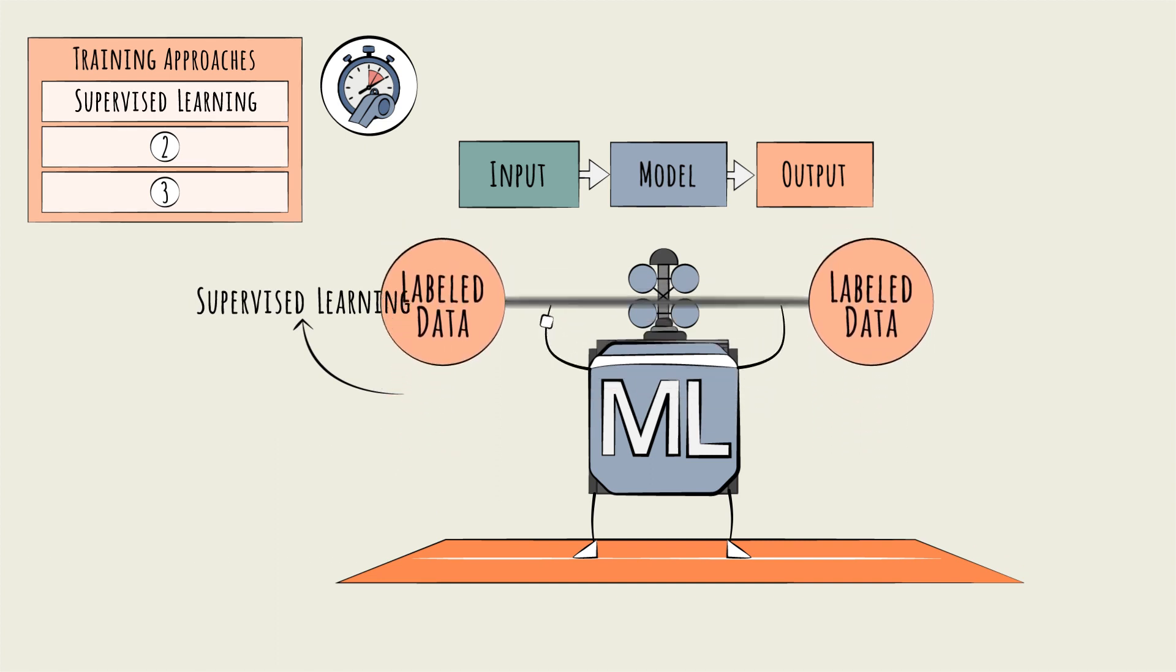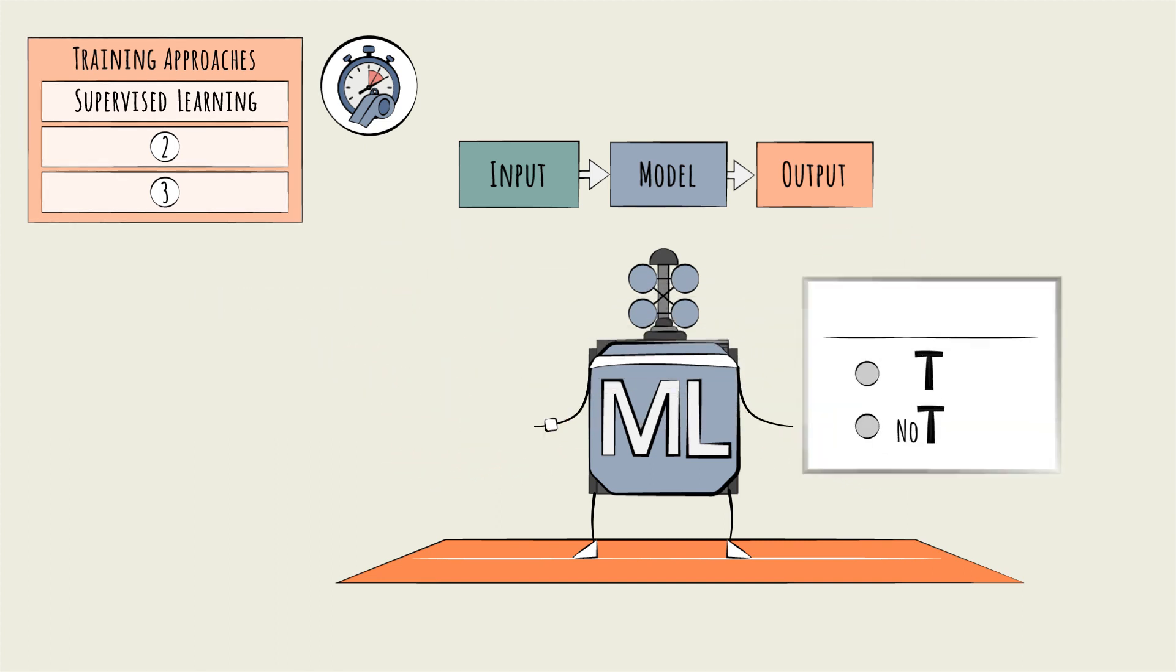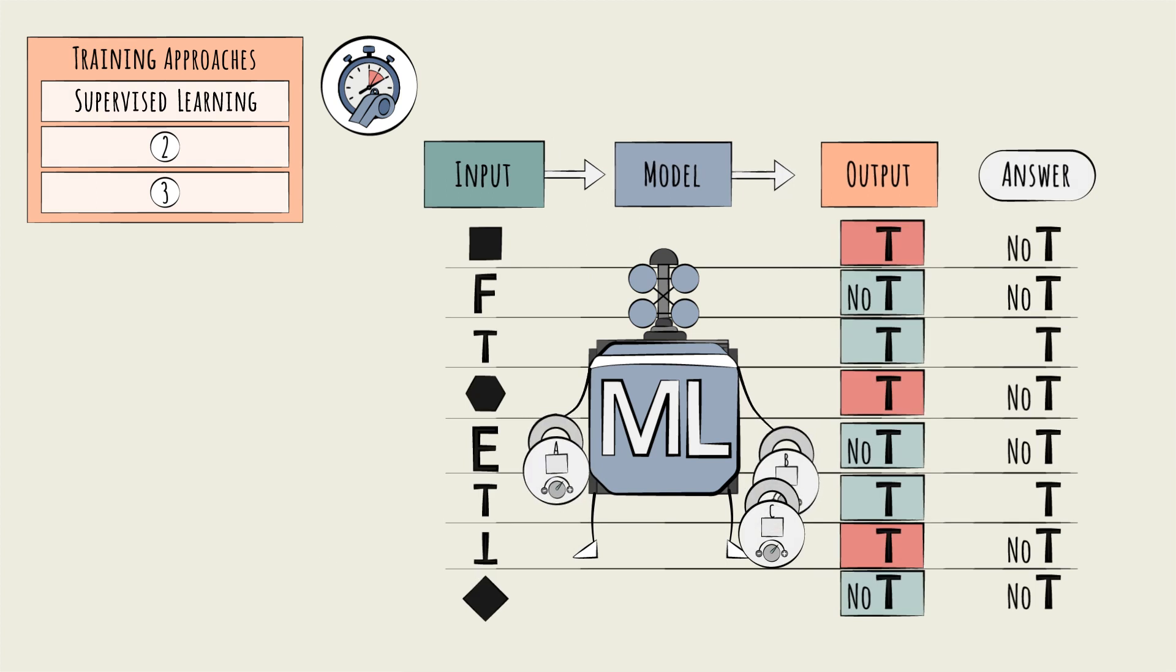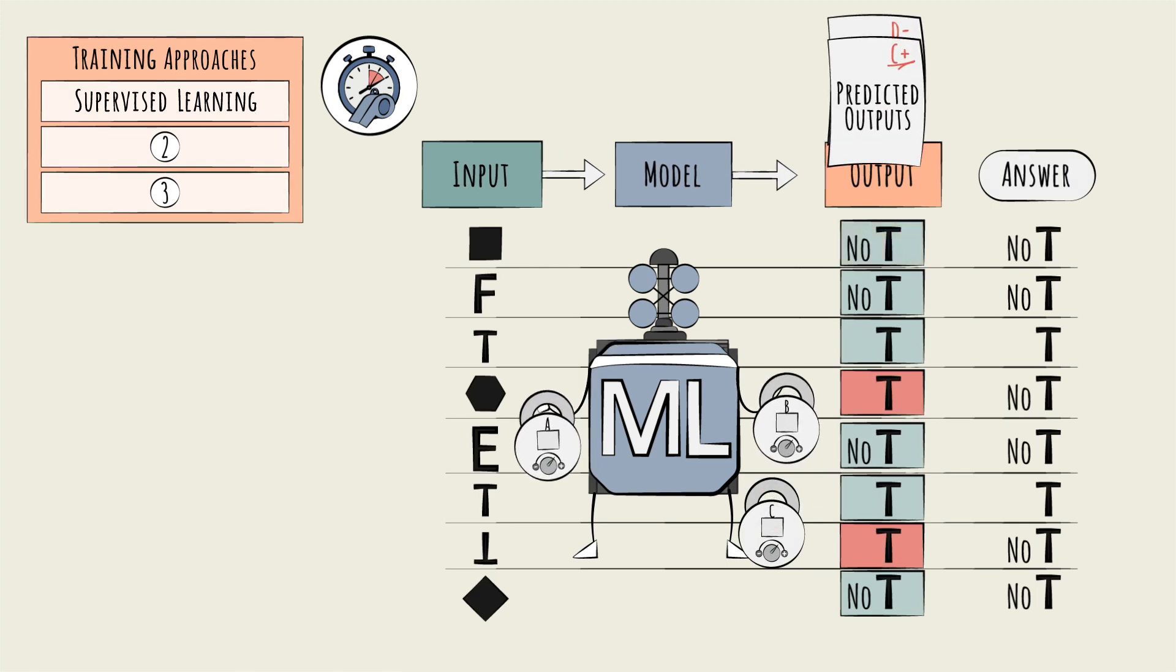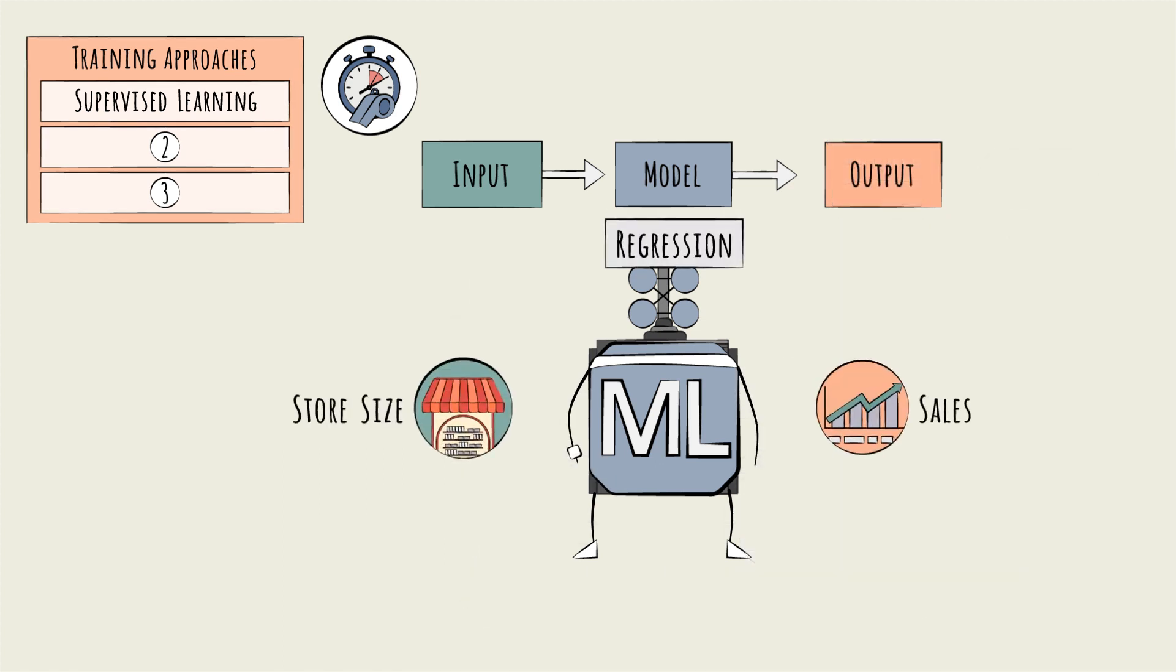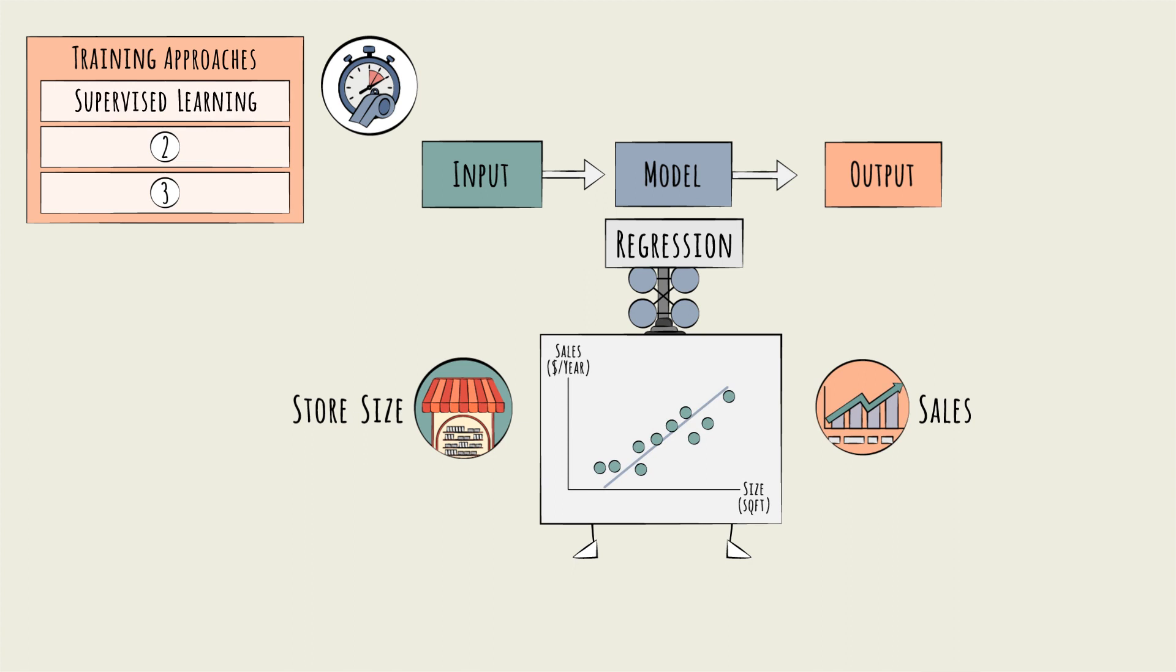This is like training with an answer key. For each input value, we can compare the model's predicted output with the answer, the known output. During training, the model parameter values are refined until its predicted outputs match the known outputs as closely as possible. Regressions, like in our earlier store sales model, used supervised learning.